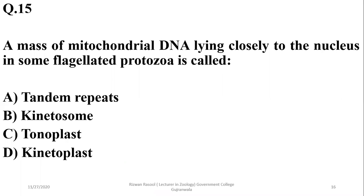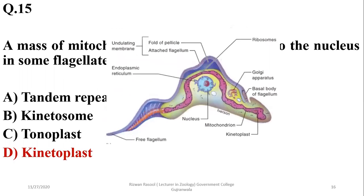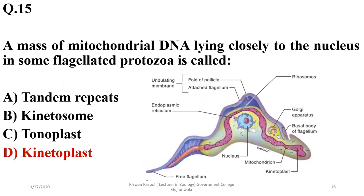Question fifteen: a mass of mitochondrial DNA lying closely associated with the nucleus in some flagellated protozoa is known as the kinetoplast. Kinetosomes are another name for basal bodies. As shown in the diagram of Trypanosoma, the kinetoplast can be seen just beside the mitochondrion. The correct option is D.